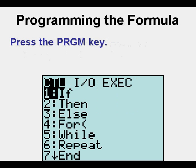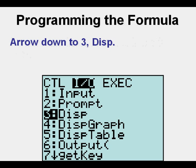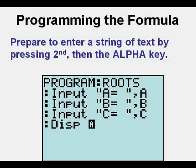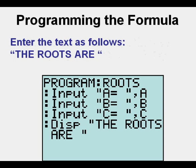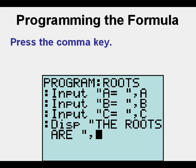Go to the next line of code by pressing Enter. Press the program key, then arrow once to the right for the input/output menu. Arrow down to 3, Display, and press Enter. Prepare to enter a string of text by pressing Second, then the Alpha key. Enter the text: 'The roots are.' Press the Alpha key to unlock alpha mode, then press the comma key.